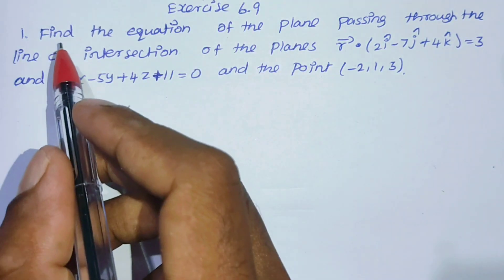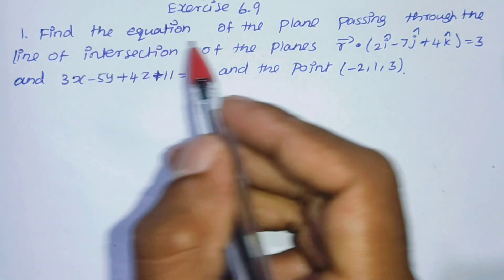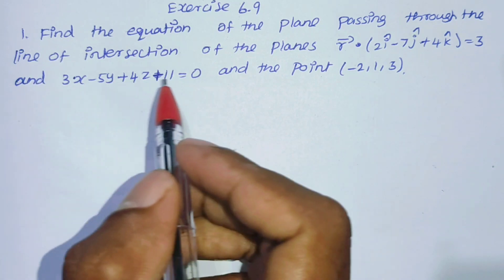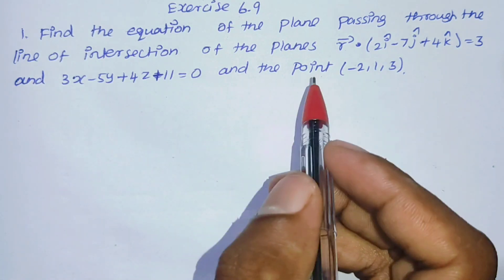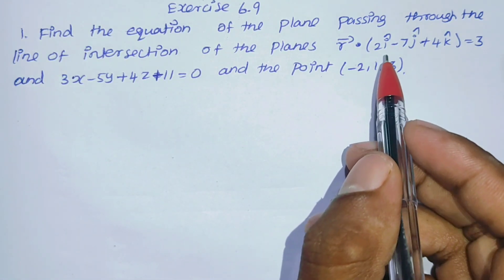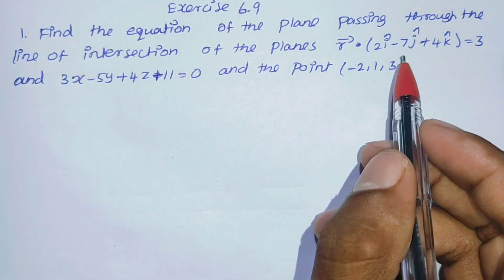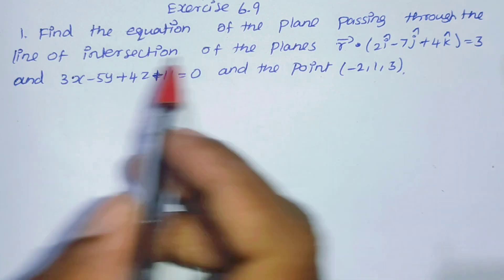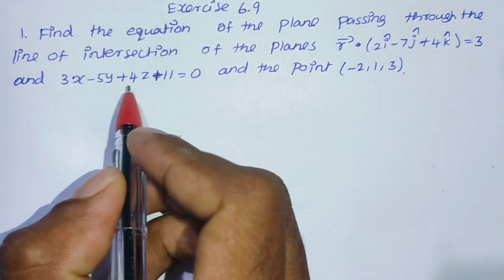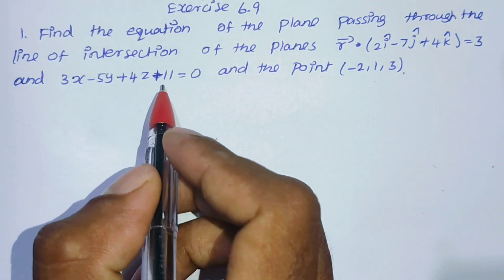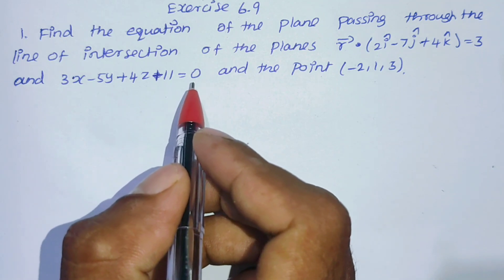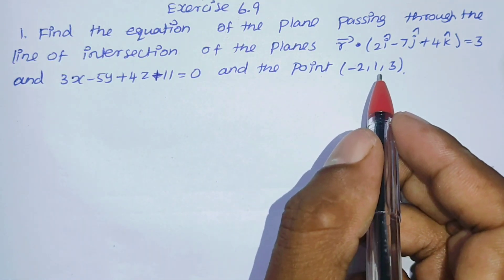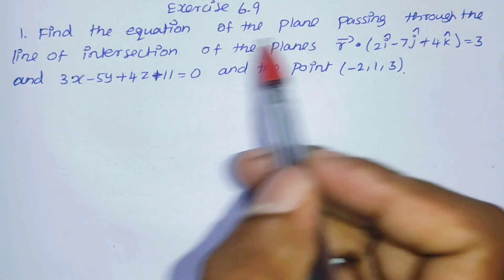Exercise 6.9, question number 1: find the equation of the plane passing through the line of intersection of the planes r vector dot product of 2i cap minus 7j cap plus 4k cap equal to 3, and 3x minus 5y plus 4z plus 11 equal to 0, and then the point (-2, 1, 3).